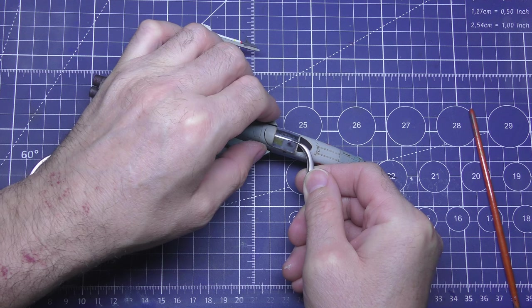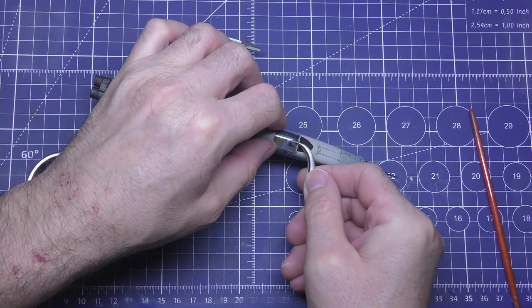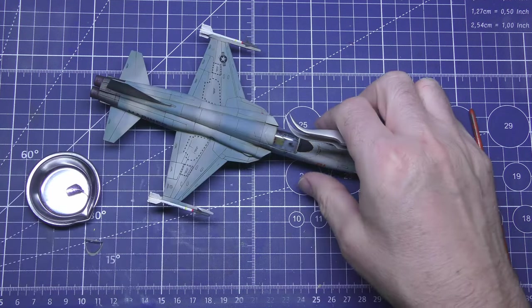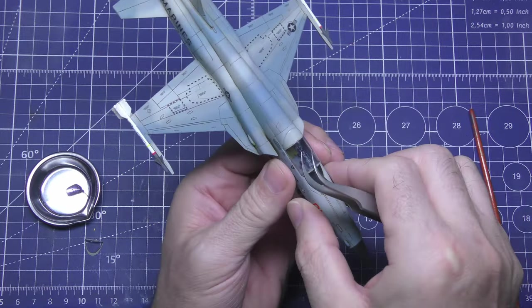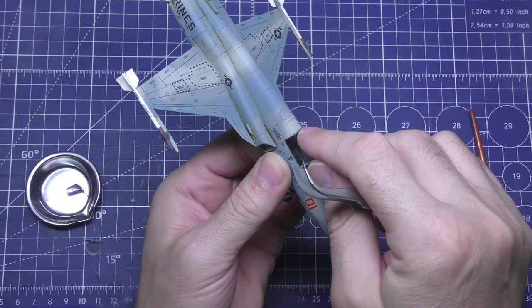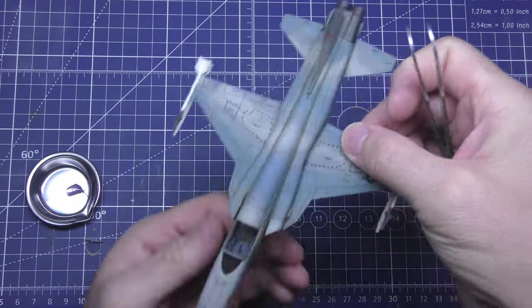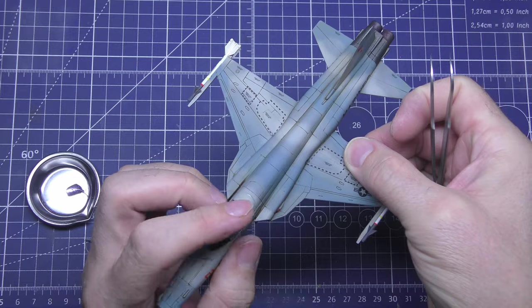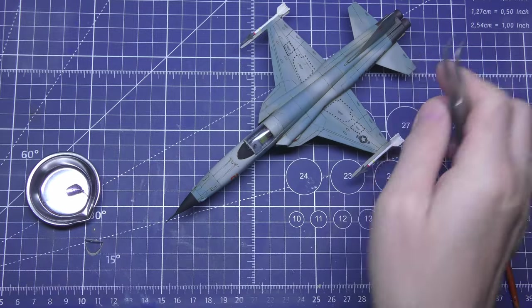Canopy's going on with Elmer's clear glue. It says it's purple and dries clear, and it does. It's got a really good bond as well. And if you get any on anything, it wipes off with water. That's why I like it.